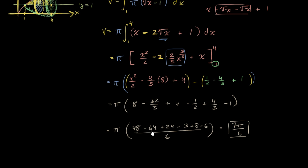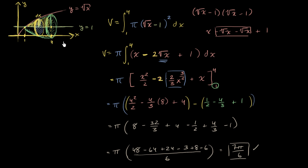So we get 7π/6, and we're done. We figured out the volume of this little sideways cone-looking thing.